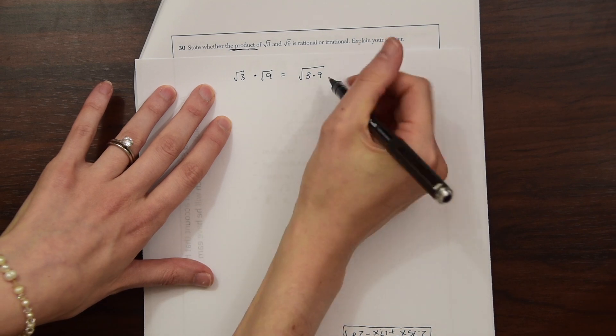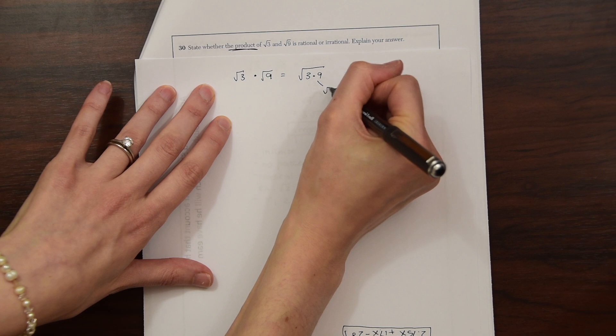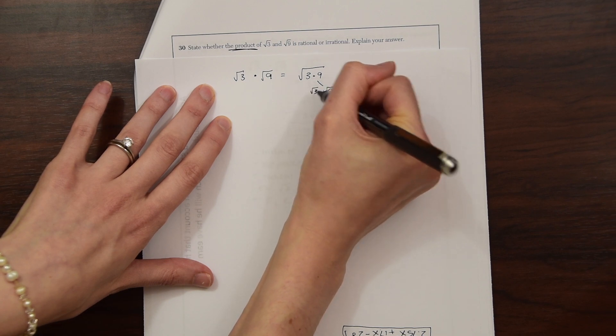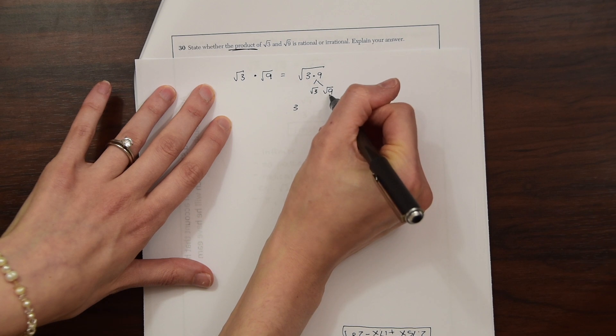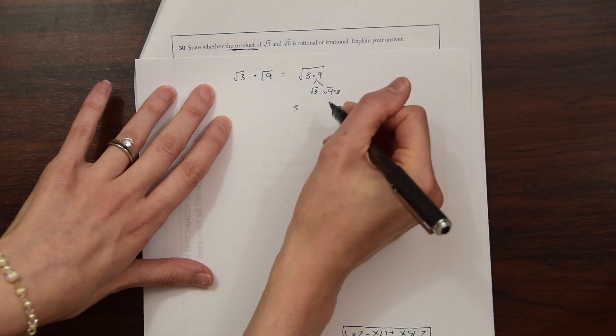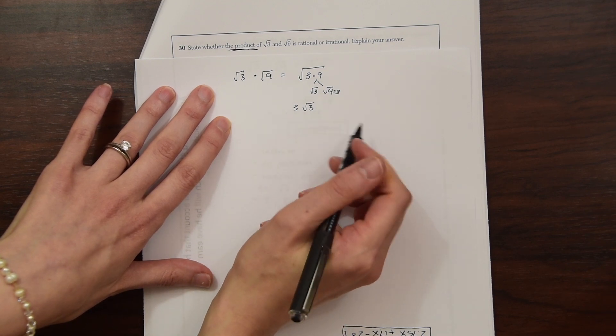So if you notice that radical 9, that's a perfect square. So we know that we could take that out. So this is really like radical 9, radical 3 inside. And we could take this 9 out, which is really equal to 3, and then we're left with radical 3 under this radical right here.